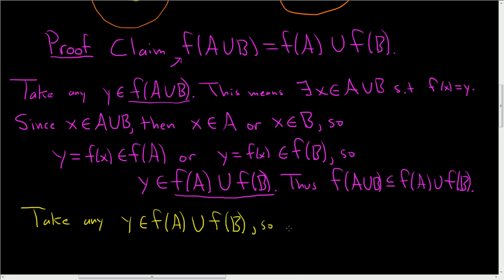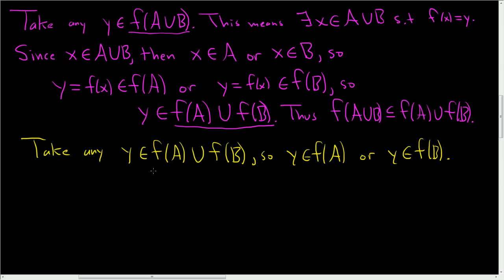So this means, by definition of union, Y is in F of A, or Y is in F of B. Now, the proof is the same from here on out, regardless of which case we take. So I'm going to assume, without loss of generality, that Y is in F of A.